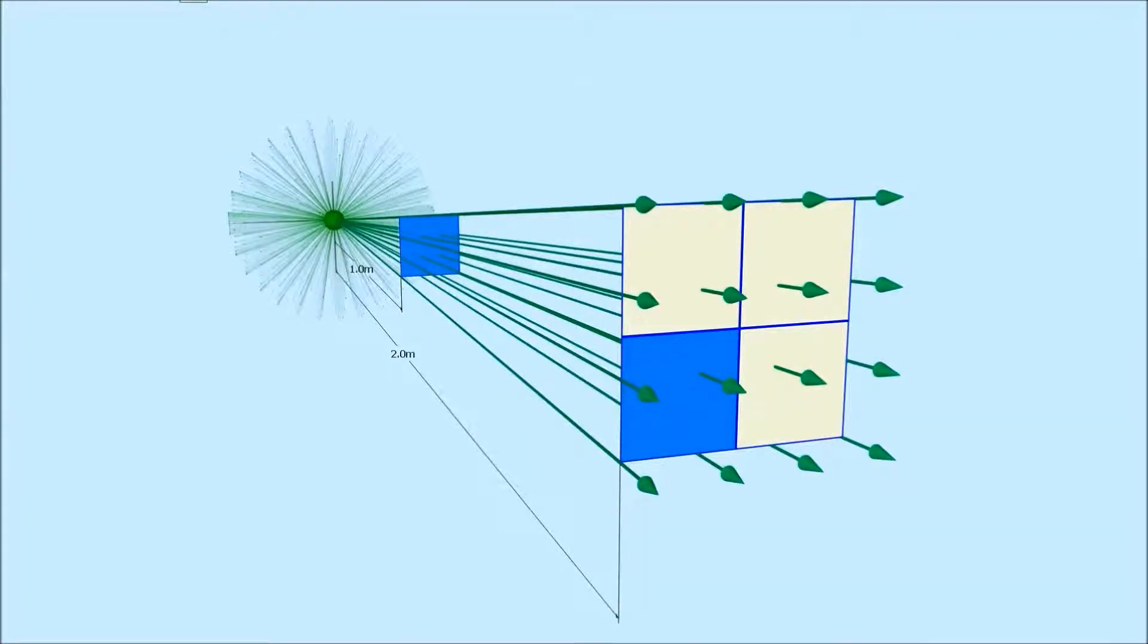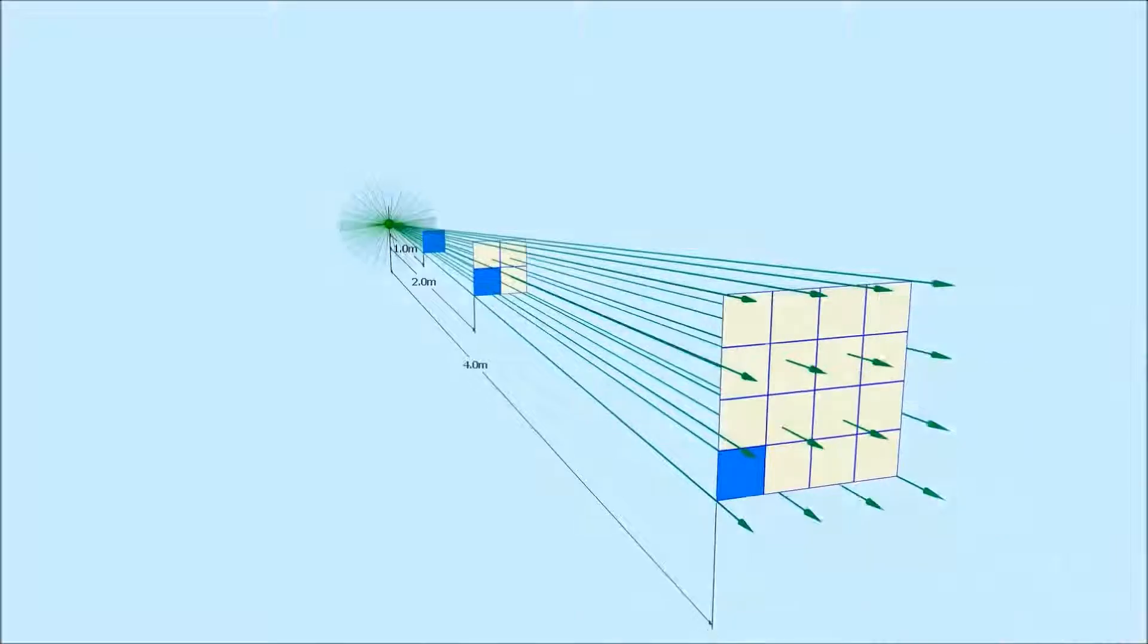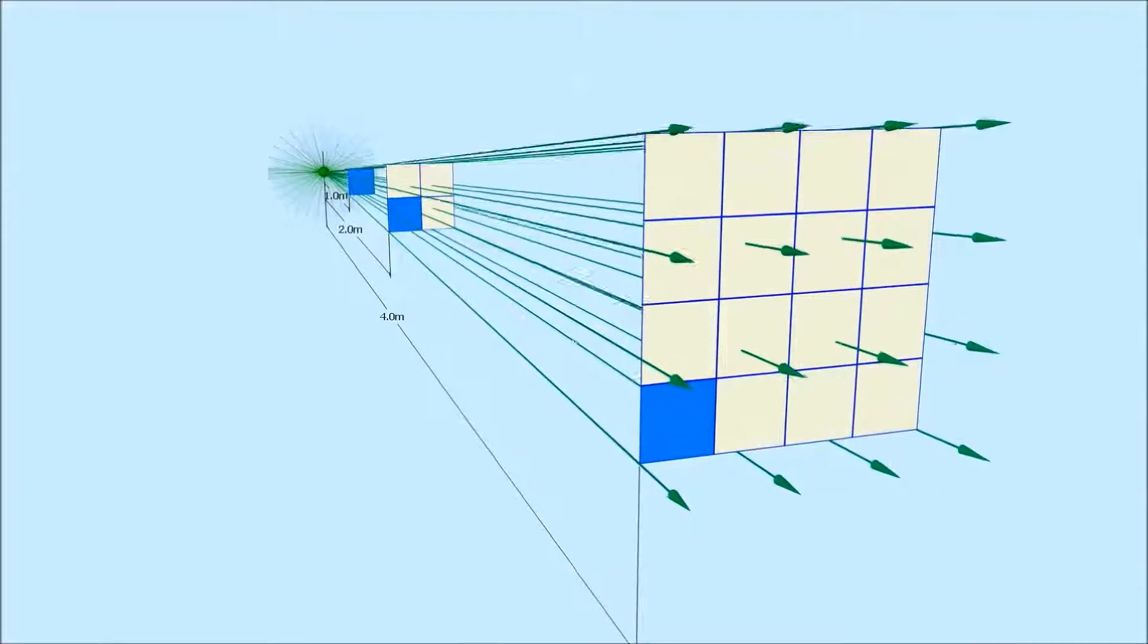Now let's zoom out further. As we go to 4 metres away, we can see that our light rays now intersect an area of 16 squares. When we zoom in, we can see that our original blue square now only has a single light ray intersecting it.